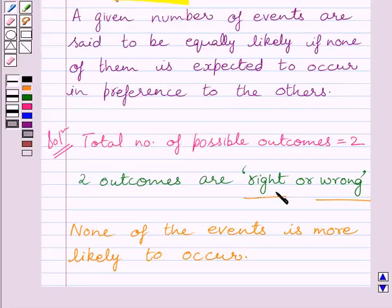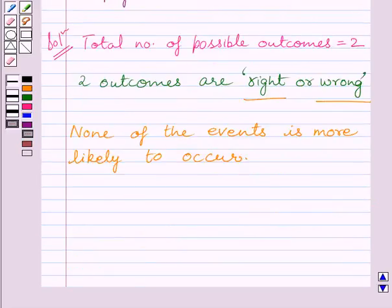Here, none of the event is expected to occur in preference to the other. So, we can write, each outcome is as likely to occur as the other.